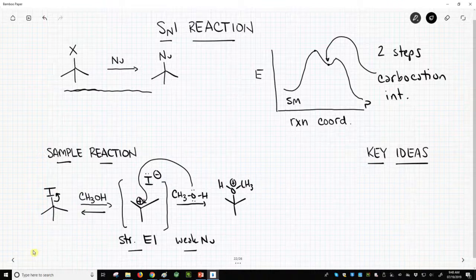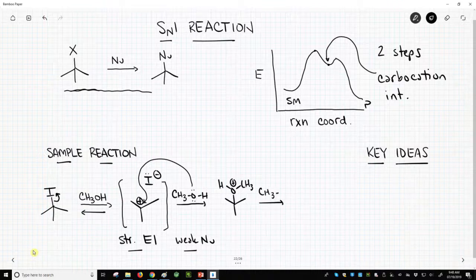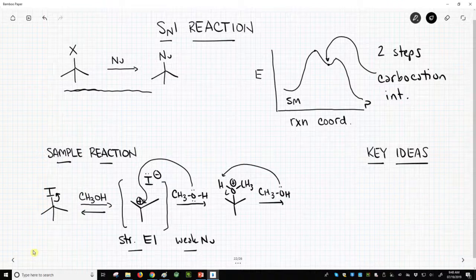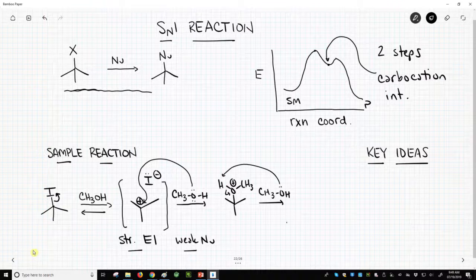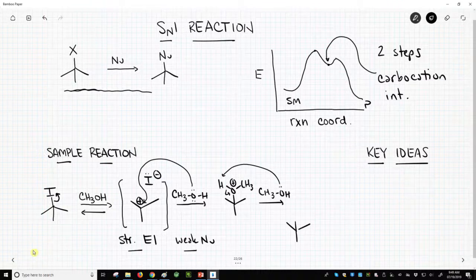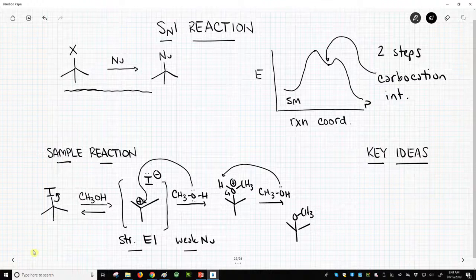Now, as it turns out, we need a third step in this reaction because we have to get rid of this extra hydrogen on our methanol. And so we'll use another molecule of methanol as a base to remove that hydrogen. I'm going to draw this final product down here to give me space for the key ideas. But this is our final product.